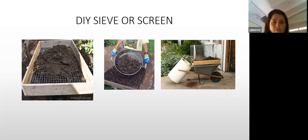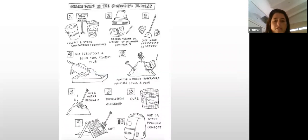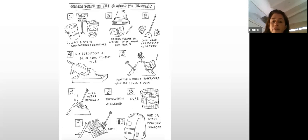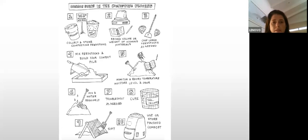The basic flow of composting: number one, collect and store your feedstocks and record volumes or weights. If you've got very chunky feedstocks, chop or chip them, then mix to build your compost pile. Record temperatures, monitor moisture levels and odors, check for any problems, make sure your compost moves through all stages of composting, and finally let it cure for six to twelve months before it's used or sold.